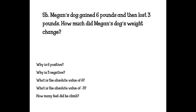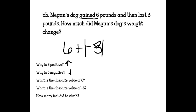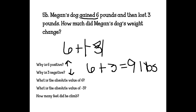Megan's dog gained 6 pounds and then lost 3 pounds. How much did the dog's weight change? The dog gained 6 pounds — that's positive 6. Lost 3 pounds — that's negative 3. The absolute value of 6 is 6, and the absolute value of negative 3 is 3. So 6 plus 3 equals 9 pounds total change.